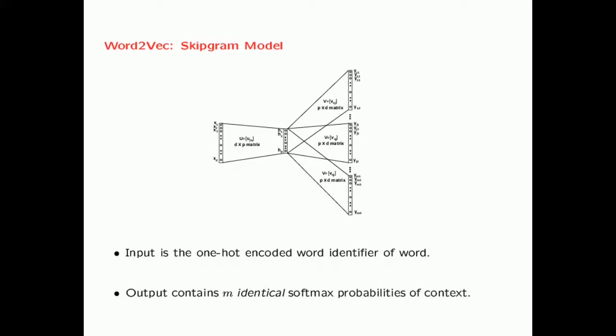In the output layer, since you're trying to predict m context words, you're going to have m output sets. Each of these output sets has d outputs because each of them is a word. For each position, you're trying to predict which word it is. So the output contains m identical softmax probabilities. Note that these output weights are shared. The same matrix V is used in each of these m possibilities. Because the same set of weights is used in each of the m possibilities, you will have exactly the same prediction for each of the set of m outputs.